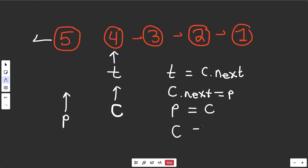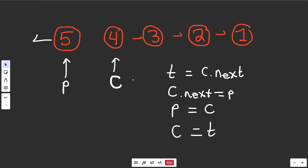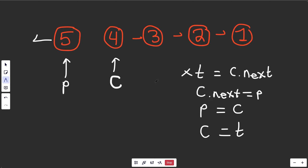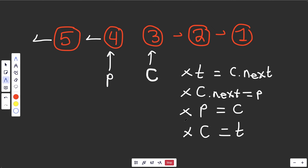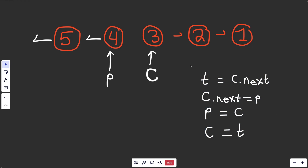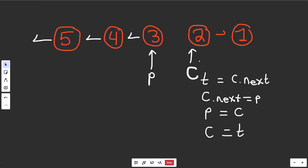Then we set curr equal to t. Now p is pointing here and c is pointing to the next node - great shape to repeat the same steps. Step one: t equals c.next. Then c.next equals p - that draws the backward connection and removes the forward one. Then p equals c, moving prev forward. And c equals t, moving curr forward. We've done all those operations and all pointers are in the right spot.